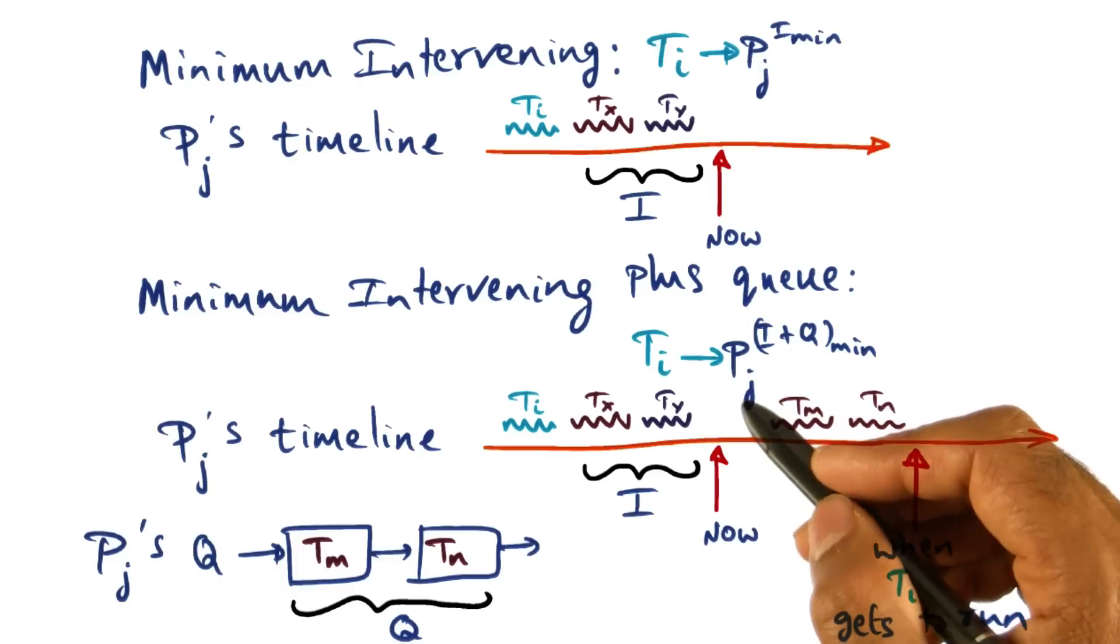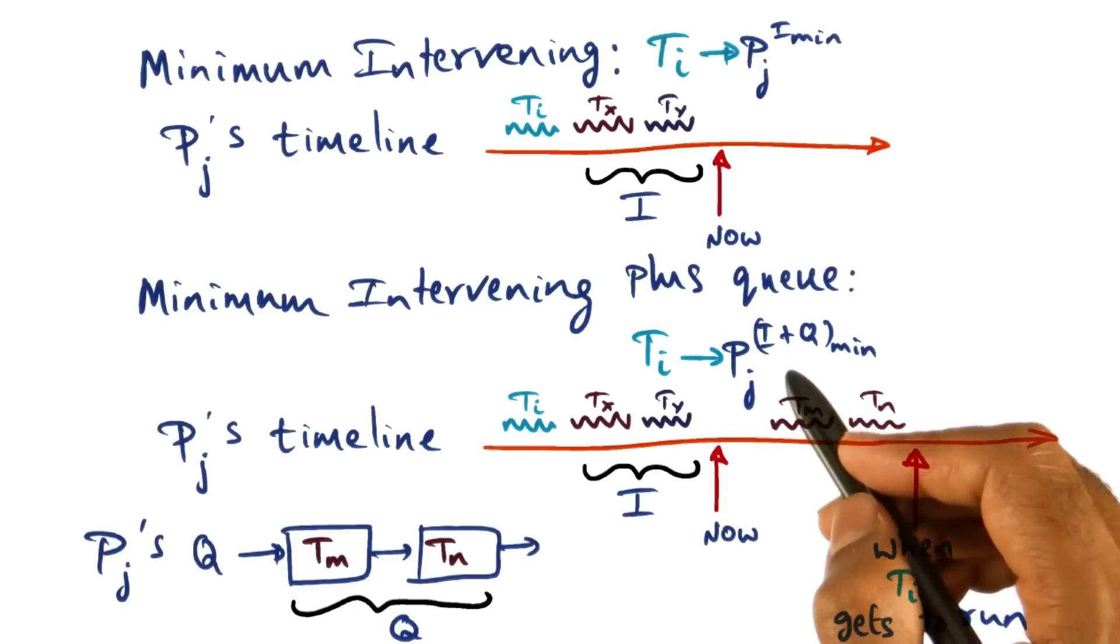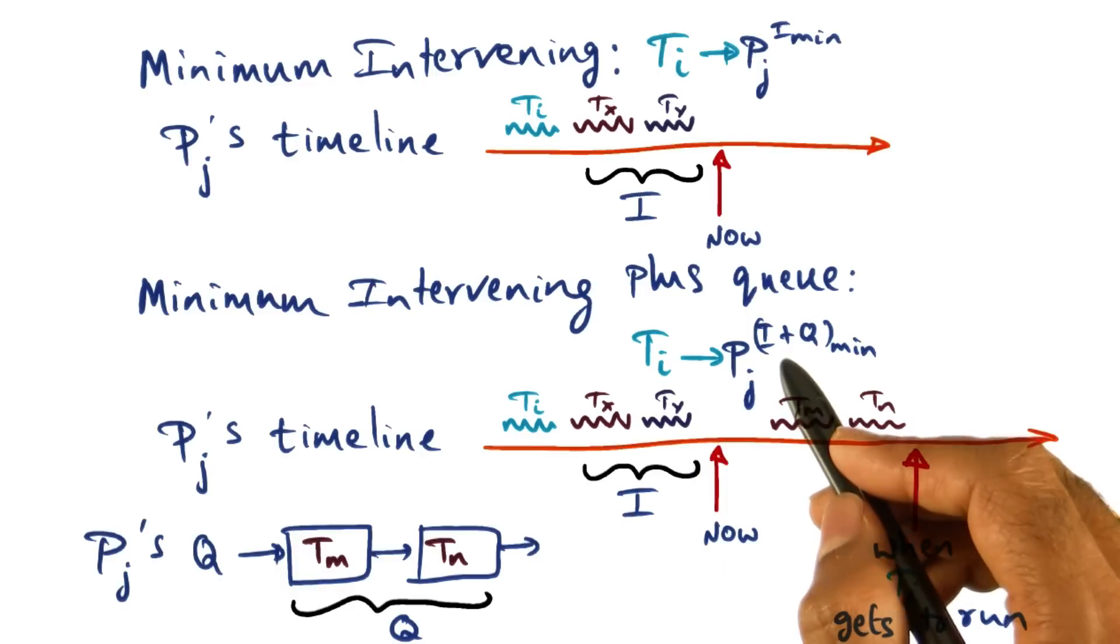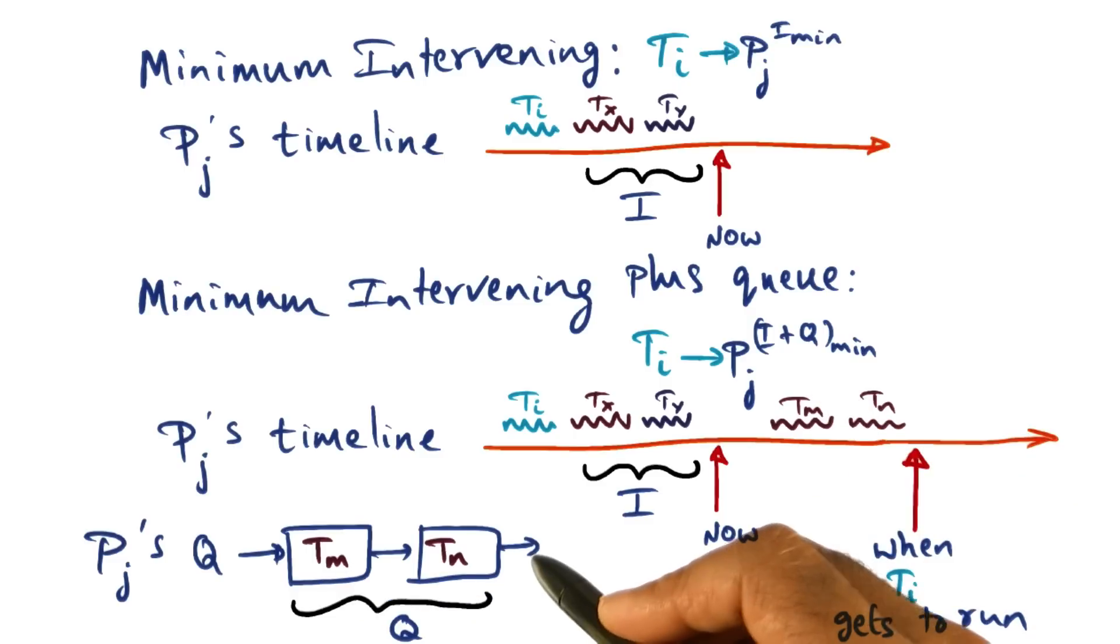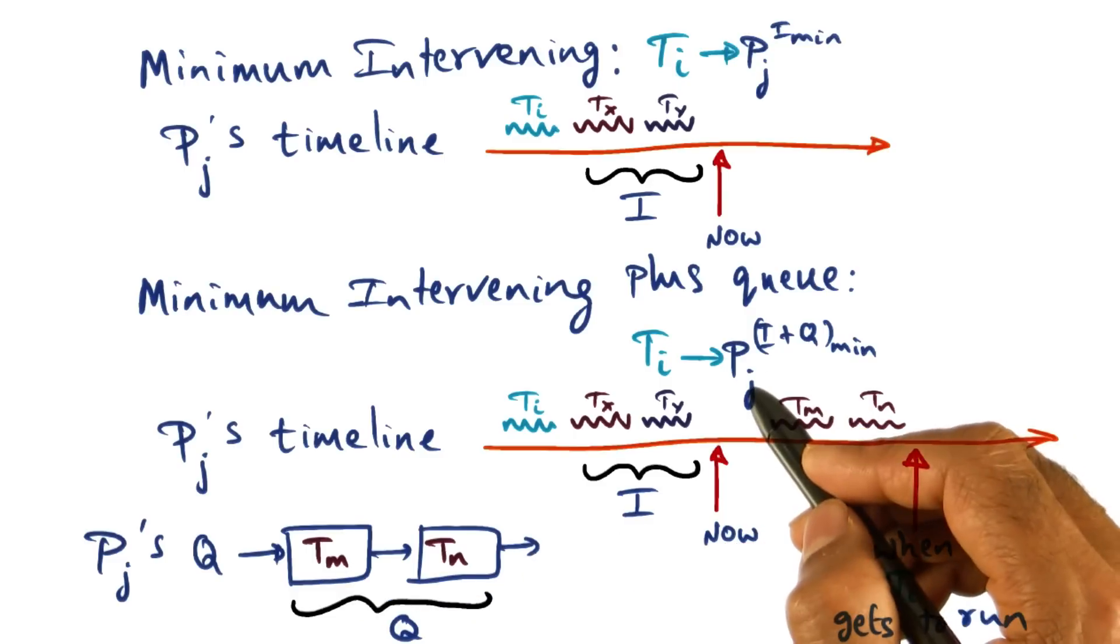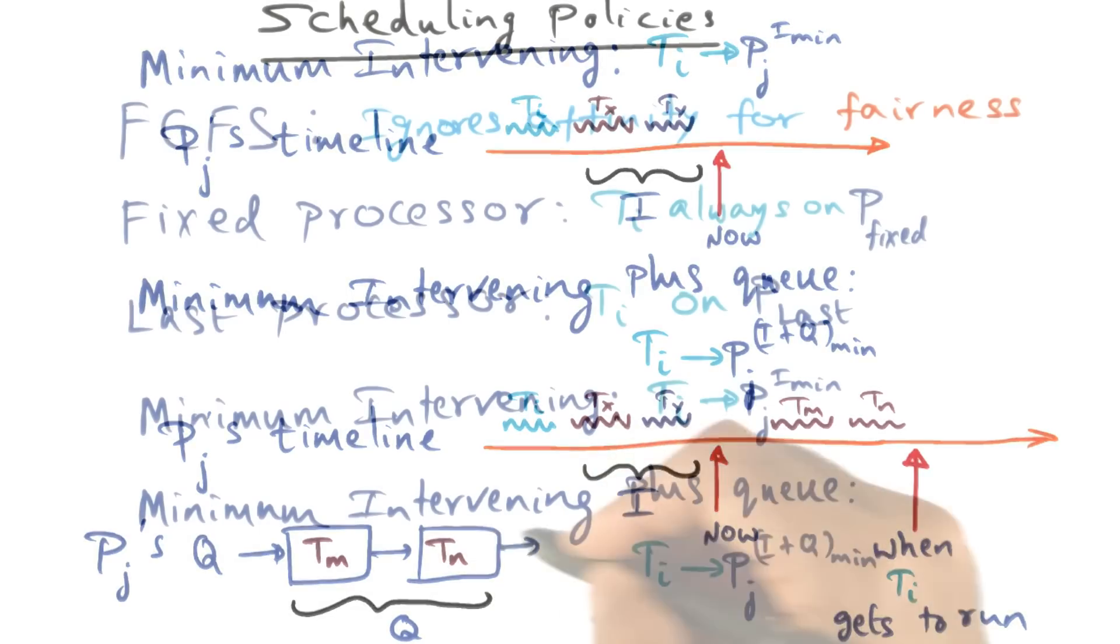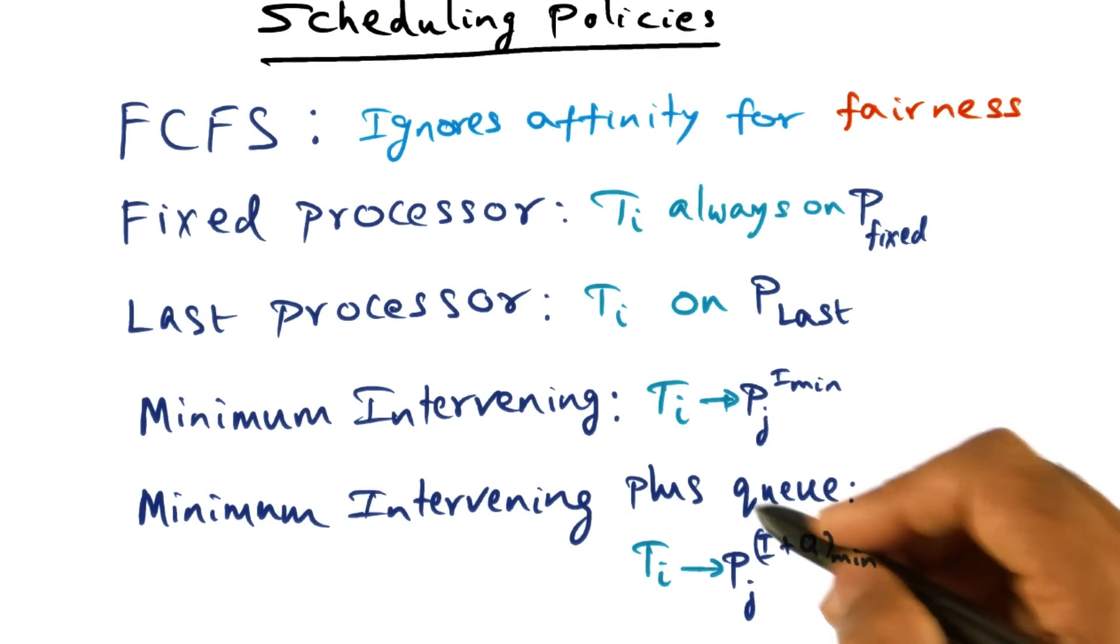In that case, the processor that I want to pick ti to run on is the min of i plus q, where i is the affinity index and q is the size of the scheduling queue associated with this particular processor pj. So that's the last scheduling policy.